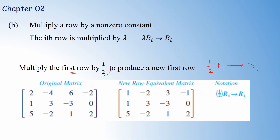For example, suppose we have the original matrix with first row [2, -4, 6, -2]. To make the leading entry 1, we multiply the first row by one-half, which means dividing by 2: 2/2 = 1, -4/2 = -2, 6/2 = 3, -2/2 = -1. So the new first row is [1, -2, 3, -1]. The notation is: (1/2)R1 → new R1. This is the second row operation — multiplying a row by a non-zero constant.